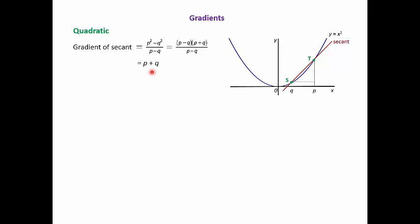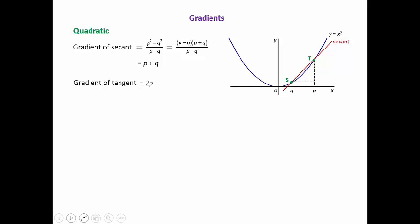To prove this properly, call the x-values P and Q. The gradient of the secant is P squared minus Q squared over P minus Q, since the y-coordinates are P squared and Q squared. We factorize P squared minus Q squared as P minus Q times P plus Q, cancel P minus Q, and get P plus Q — confirming that the gradient equals the sum of the x-coordinates. Now, as S approaches and merges into T, the secant becomes the tangent, so the gradient of the secant becomes the gradient of the tangent. As S merges into T, Q becomes equal to P.